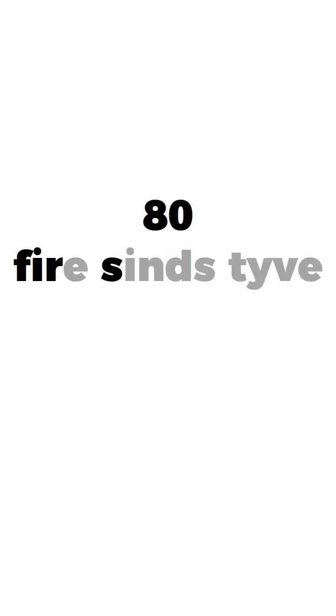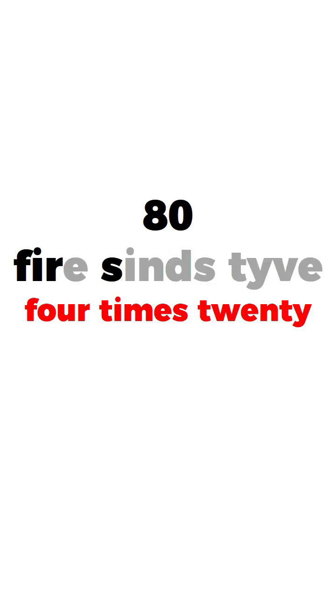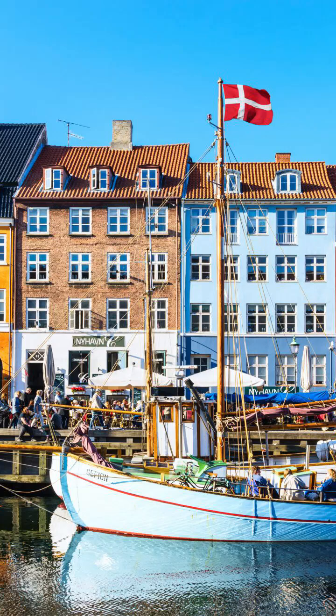From 49 onwards it's even more complicated because the number system becomes vigesimal — based on 20. For example, 80 is 'firs', because it comes from 'fire gange tyve', 4 times 20. If you pick a number that's not a multiple of 20, it's crazy.